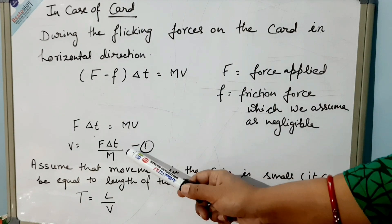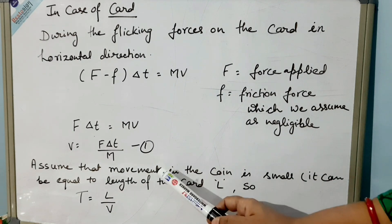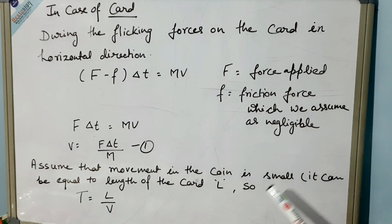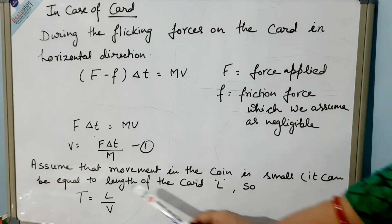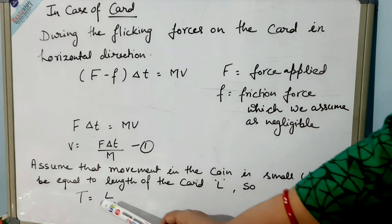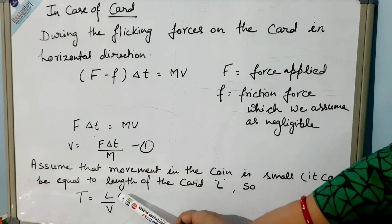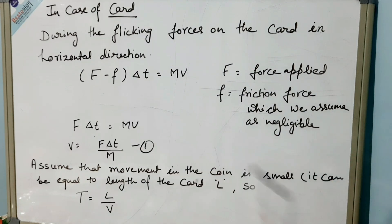Next, we have to assume that movement in the coin is small, that is, it can be equal to the length of the card L. So the time for that movement will be s/v, and s is L over here, so L/v.